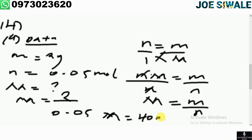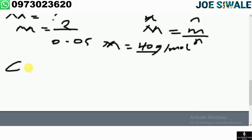I have found the molar mass. Now I need to identify the element. Going to the periodic table, the element that has the mass number of 40 is calcium. So the element is calcium, written as Ca with mass number 40 and atomic number 20.